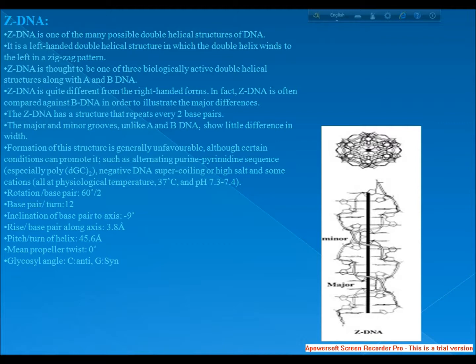Rotation per base pair: 60 degrees per 2. Base pair per turn: 12. Inclination of base pair to axis: minus 9 degrees. Rise per base pair along axis: 3.8 angstroms. Pitch per turn of helix: 45.6 angstroms. Mean propeller twist: 0 degrees. Glycosyl angle: C anti, G syn.